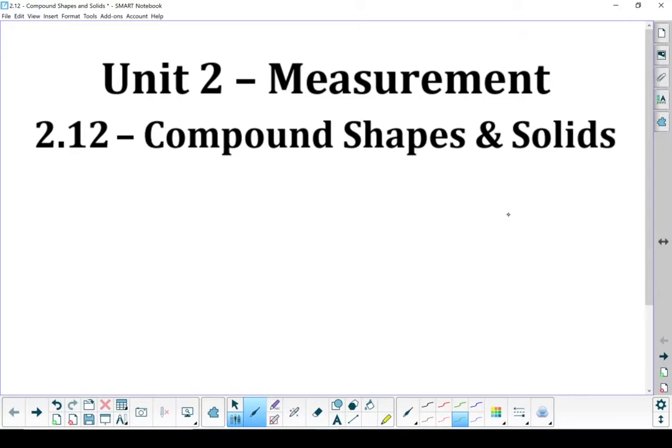Section 2.12, Compound Shapes and Solids. So let's take a look at what happens when you put multiple shapes together. Not the nice neat shapes we've been dealing with so far. This is a compound, two or more parts put together.